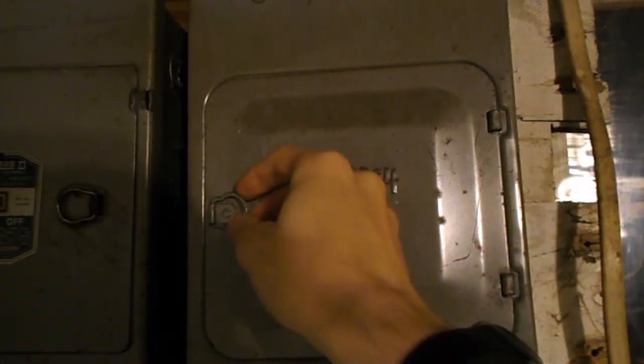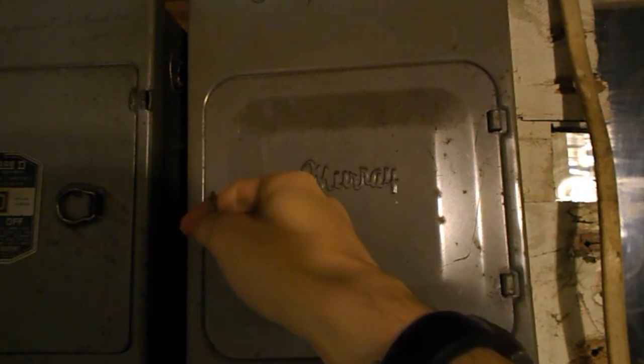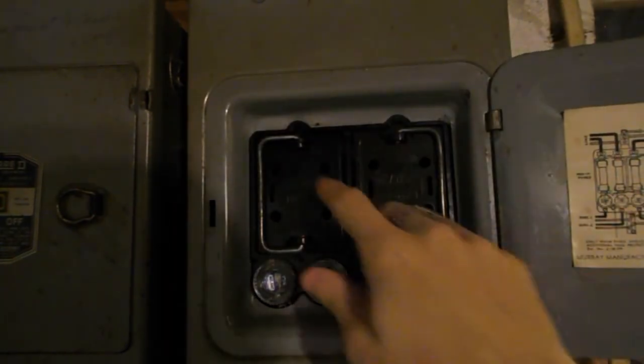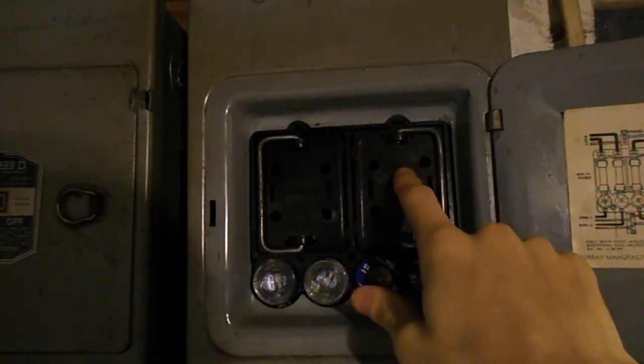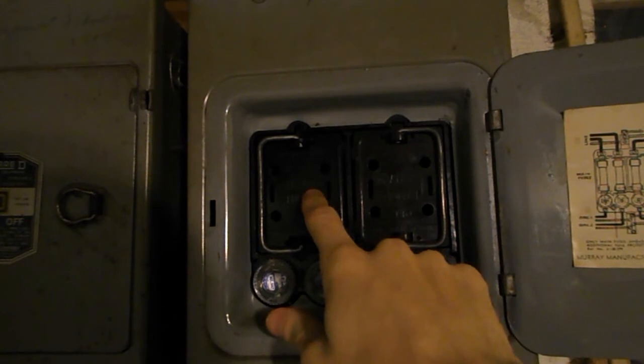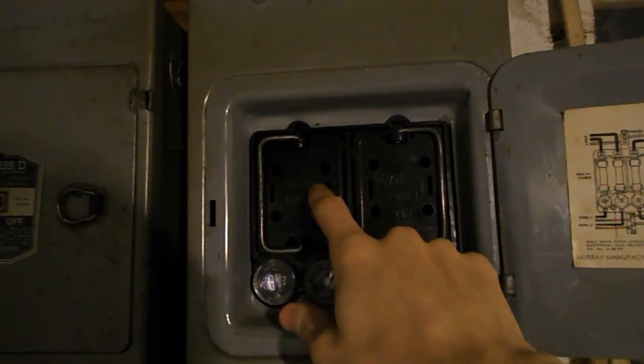What we have here is an old-fashioned 60-amp Murray fuse box. Inside there are two pull-out blocks which contain cartridge fuses. There's the main, which has the 60-amp main fuses.